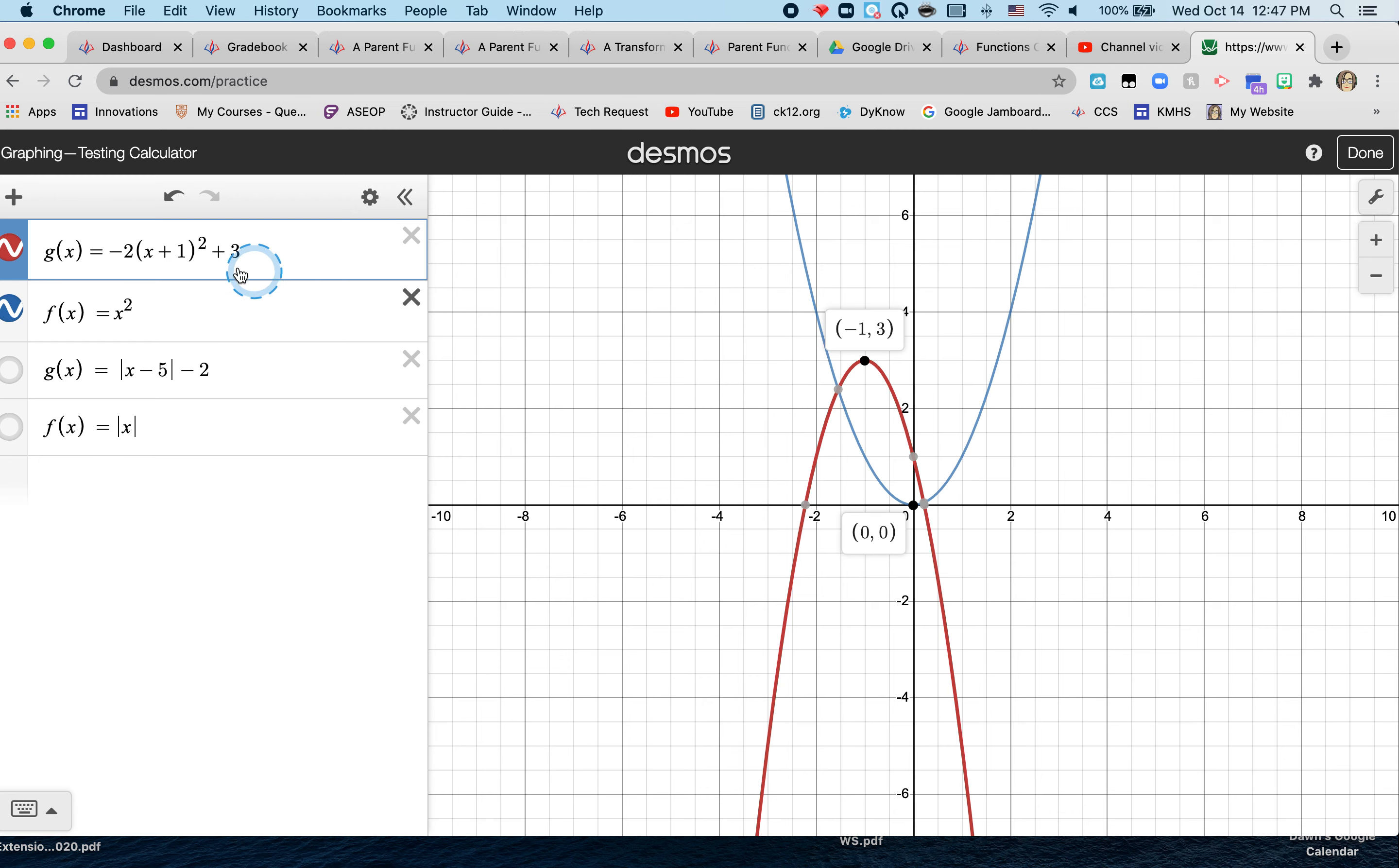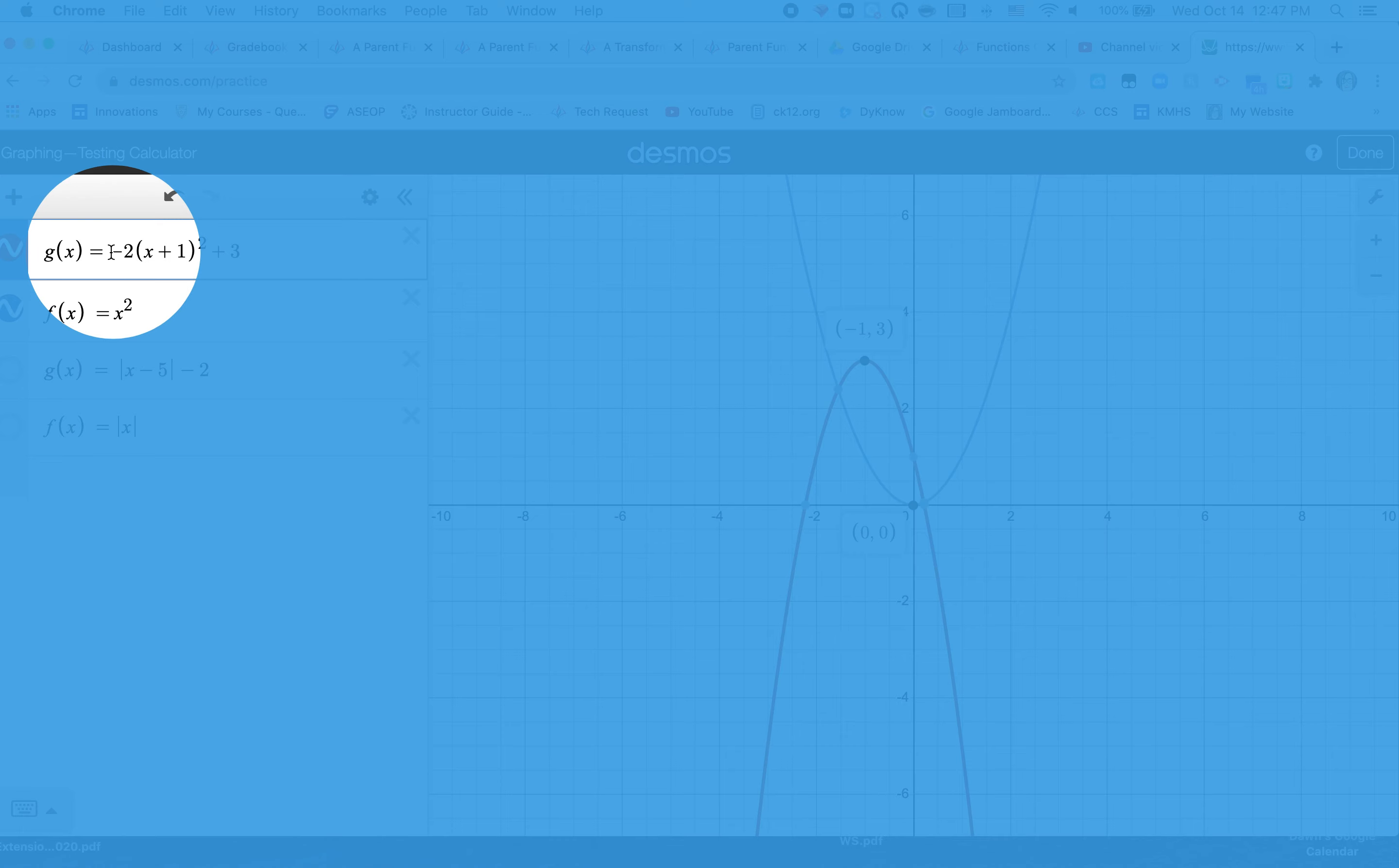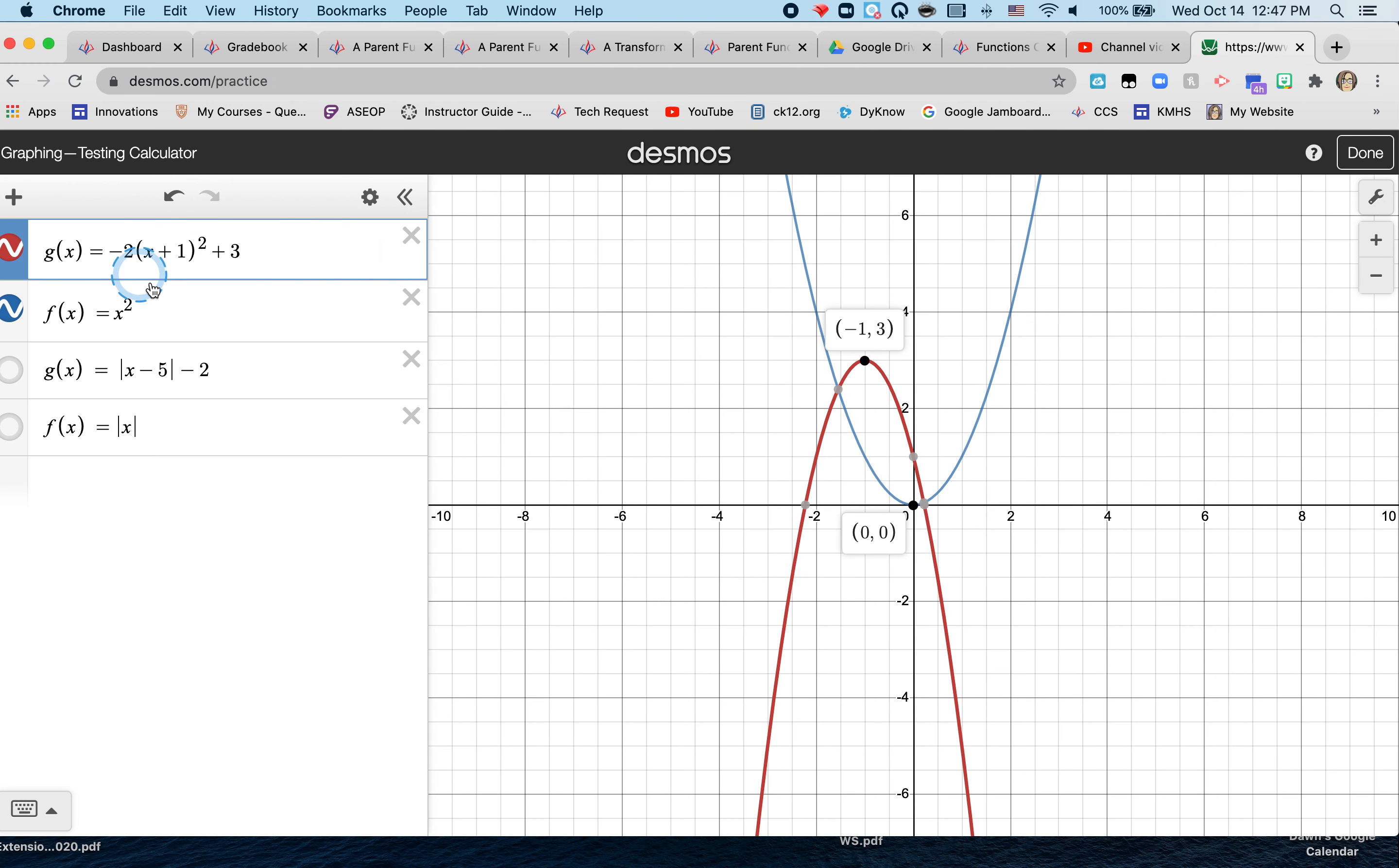And then I'm going to talk about what the negative does. The negative in front of the 2, if you look at the directions or your chart, tells you that it causes the parabola to flip or reflect over the x-axis.